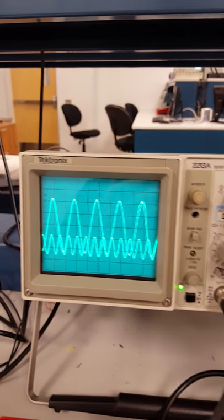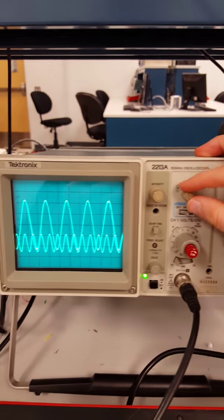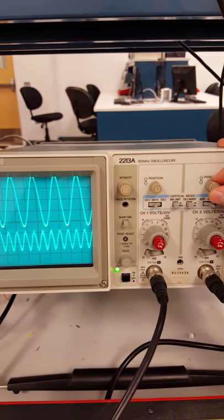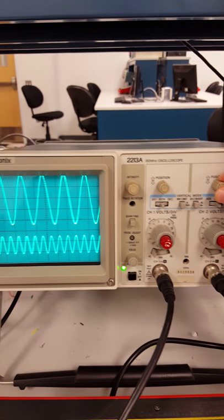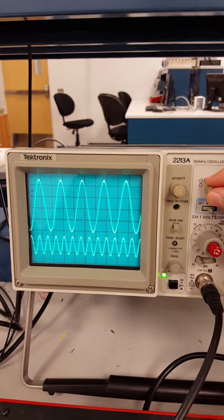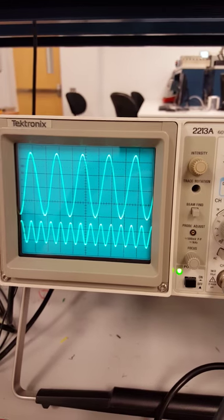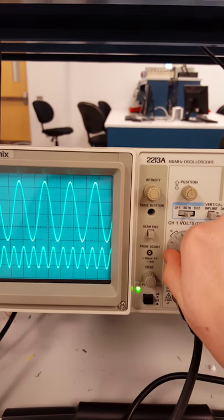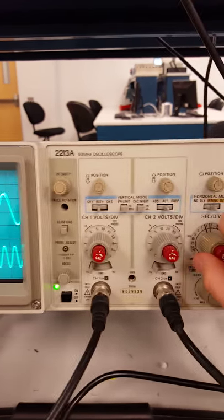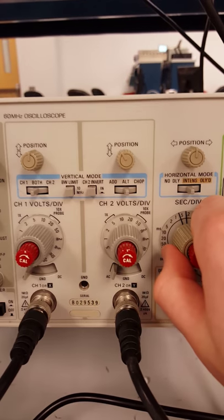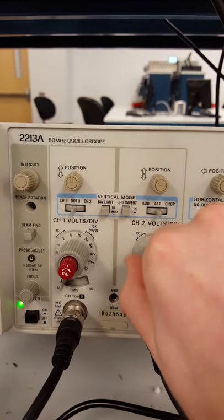Alright, now going back to both of them, we can simultaneously move one up and the other down or up to get them both on the screen. Now let's say we want to make this smaller and make this channel 2 larger. We'll go ahead and change the voltage per division for that.